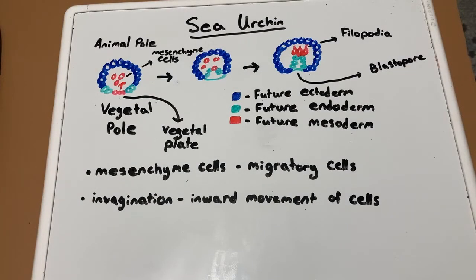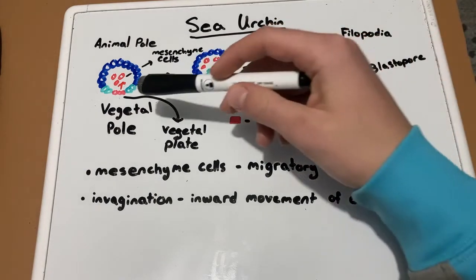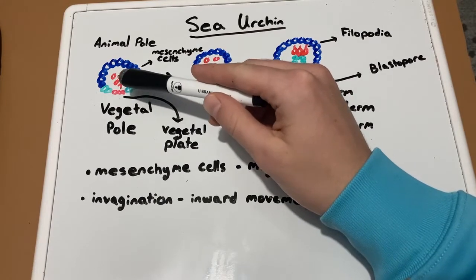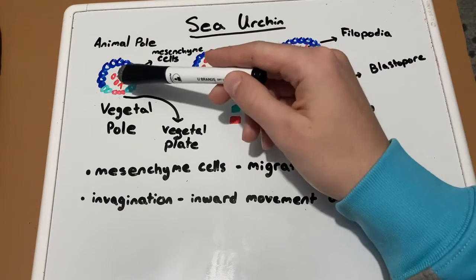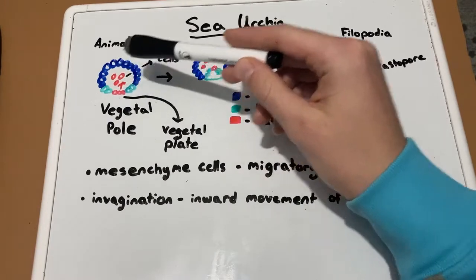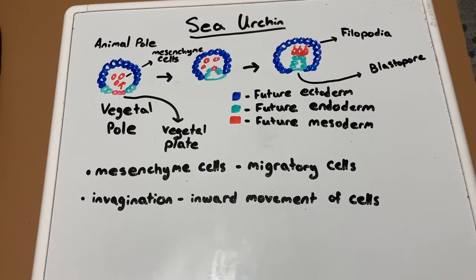We will now talk about the differences in gastrulation among different species. The first species we will look at is the sea urchin. Gastrulation in sea urchins begins when cells at the vegetal pole begin moving from the outer ring of the blastula, known as the blastocoel wall, into the blastocoel. These red cells visible here are migrating into the blastocoel, and they are known as mesenchyme cells — migratory cells.